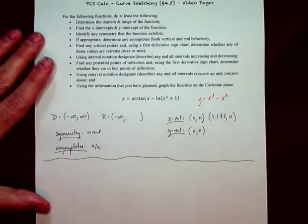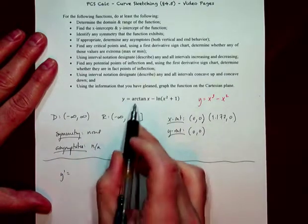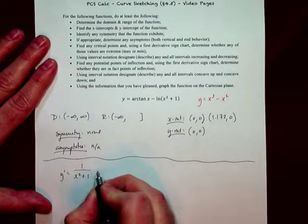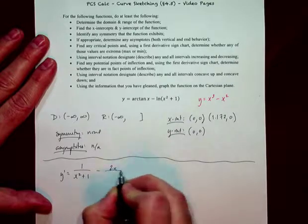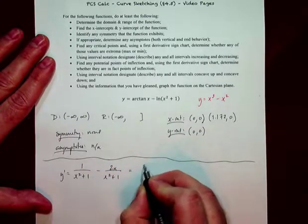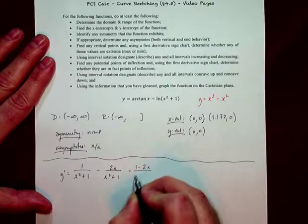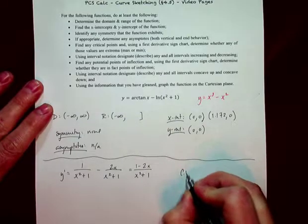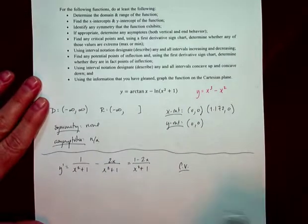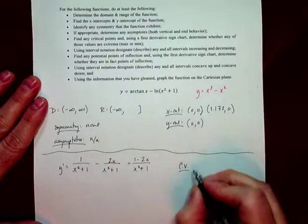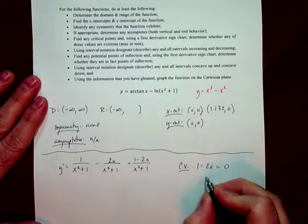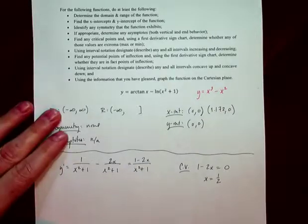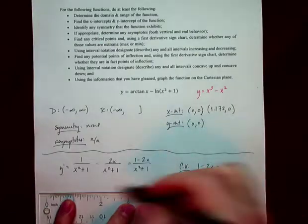Let's take the derivative. y prime: the derivative of arctan is 1 over x squared plus 1 — let's write it as x squared plus 1 — minus 2x over x squared plus 1. This has the same denominator, making it easy. The critical value won't come from the denominator — x squared plus 1 can't be zero. But 1 minus 2x in the numerator can be zero at x equals one half. That's the one critical value for the first derivative.